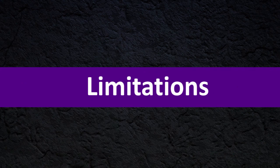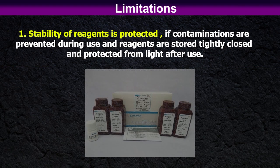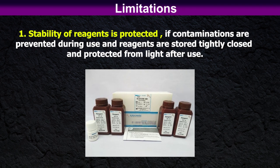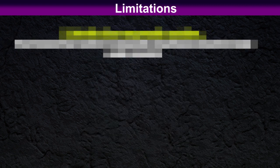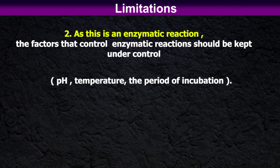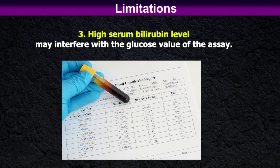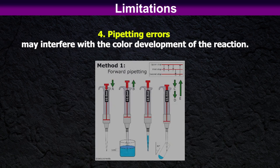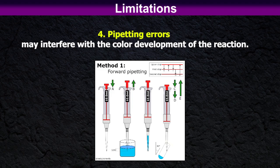Limitation: Stability of the reagent is protected if contaminations are prevented during use, and the reagent must be stored tightly closed and protected from light after use. As this is an enzymatic reaction, the factors that control enzymatic reactions should be kept under control, such as pH, temperature, and the period of incubation. High serum bilirubin level may interfere with the glucose value of the assay. Pipetting errors may interfere with color development of the reaction.